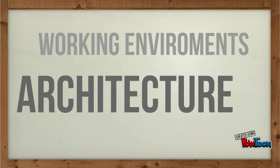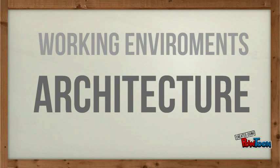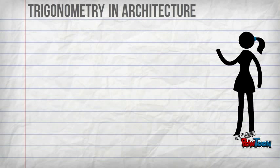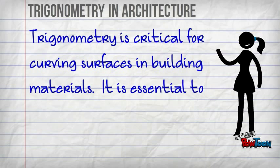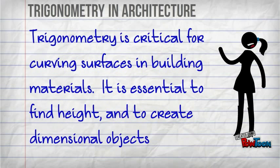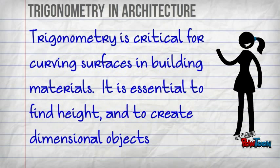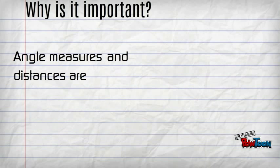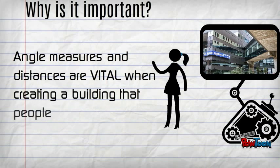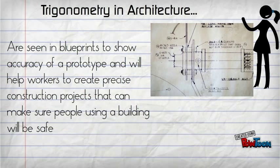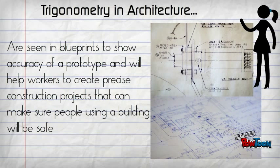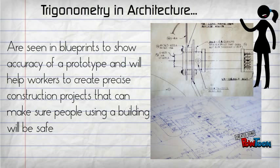One of the working environments we decided to focus on was architecture. Trigonometry is critical for curbing surfaces in building materials. It is essential to find height and to create essential dimensional objects. Angle measures and distances are vital when creating a building that people will be using. Trigonometry is seen in blueprints to show accuracy of a prototype and will help workers to create precise construction projects that can make sure people using a building will be safe.